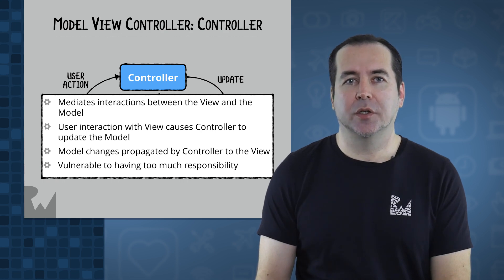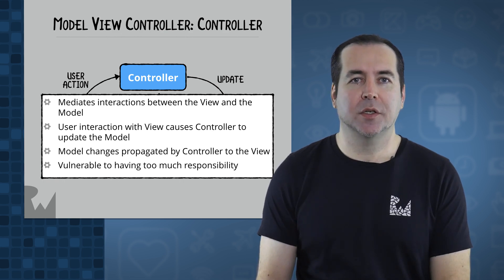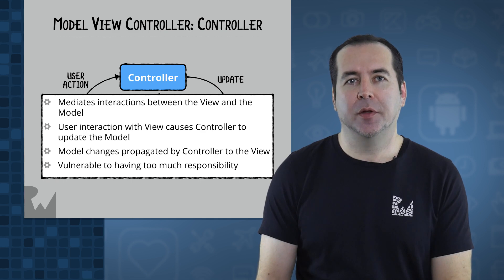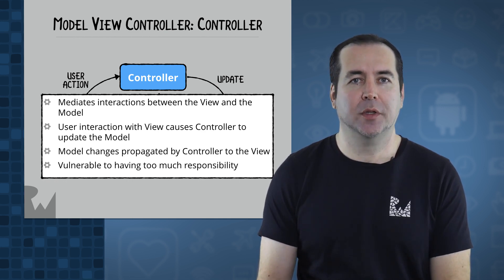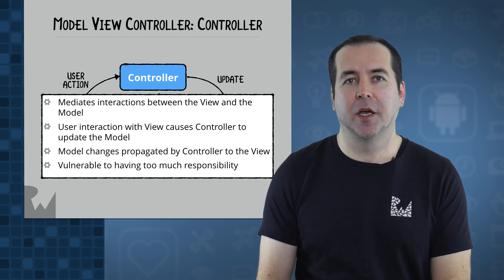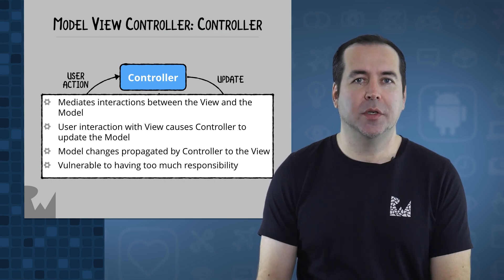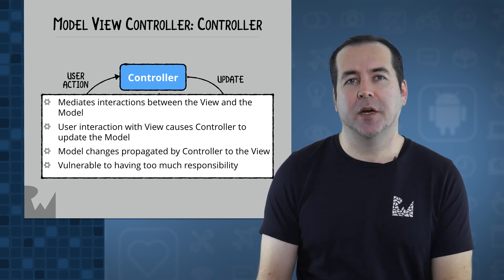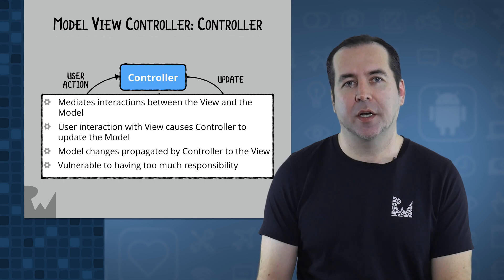Conversely, the controller propagates any changes that occur in the model layer to the view. MVC is a proven approach to user interface architecture, but it can be vulnerable to issues like having too many responsibilities placed on the controller classes, such as handling business logic, making network calls, and communicating with the database. As a consequence, developers have created a number of variations on MVC over time.